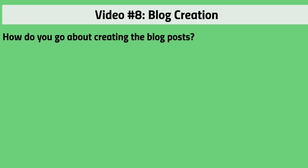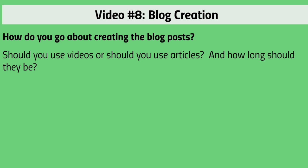Hello and welcome to video number eight. Let's talk about blog post creation. Now that you have a list of topics, should you use videos or articles? How long should they be? If you looked at the BuzzSumo examples in the previous videos, you noticed the articles were pretty long — about 1,000 to 1,500 words, which is pretty much standard nowadays. But if you can get to 2,000 words and include a video, that will help keep the retention rate of someone who lands on your blog.